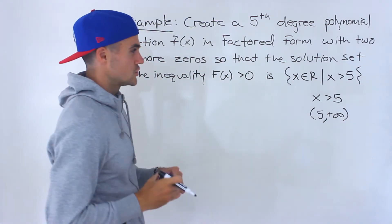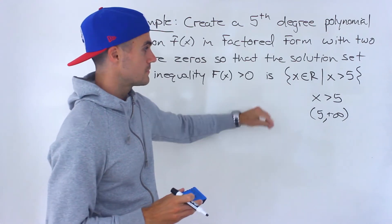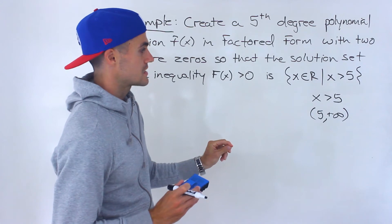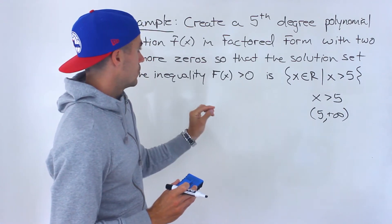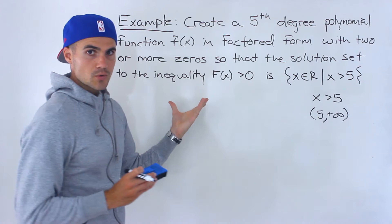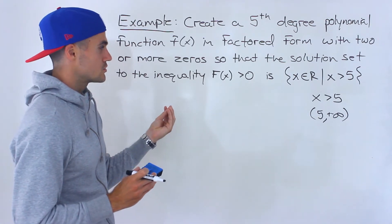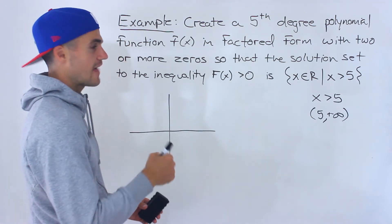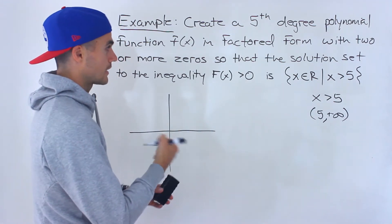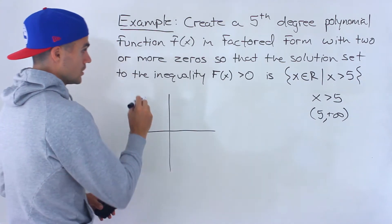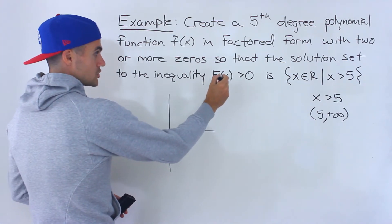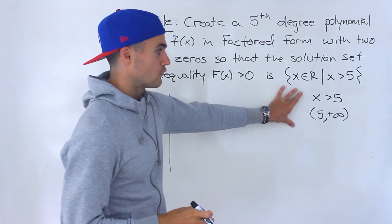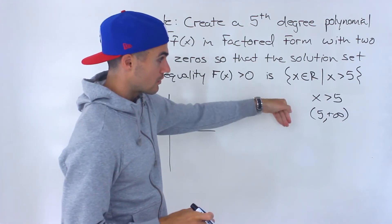You can adjust this question to whatever format you're using in class — all of these mean the same thing. When I first saw this question, my instinct was to draw it out, make a diagram first, and then create the equation. We have to make sure this polynomial is greater than zero only on the interval where x is greater than five.